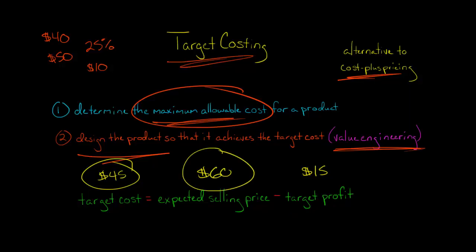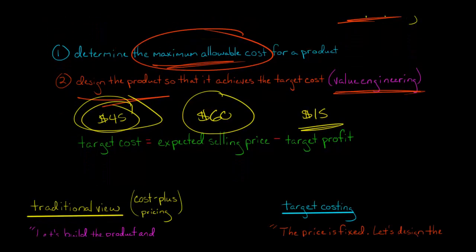So we set the price first, and then we say what's our target profit that we want? That tells us our target cost, and we need to somehow get either at $45 or below $45 in order for this to be a success.